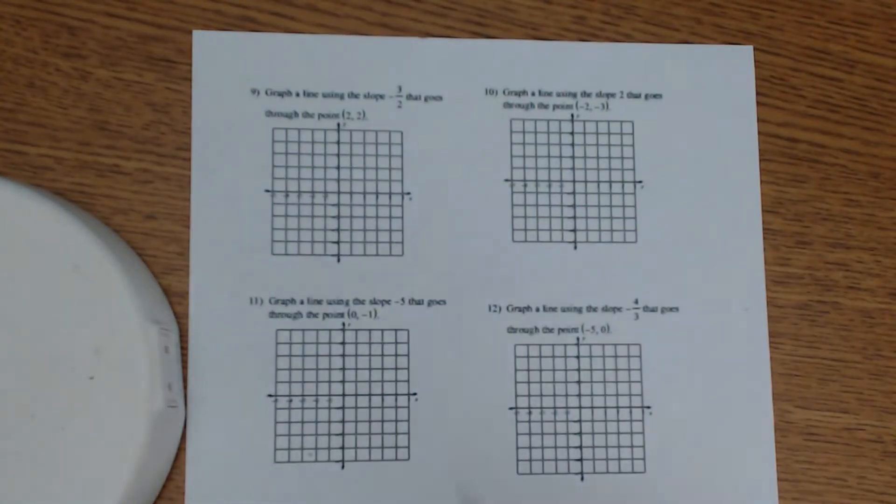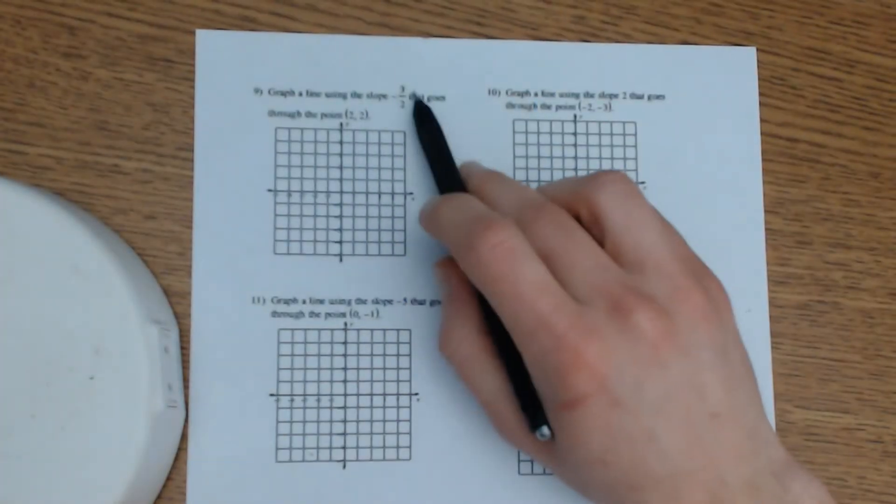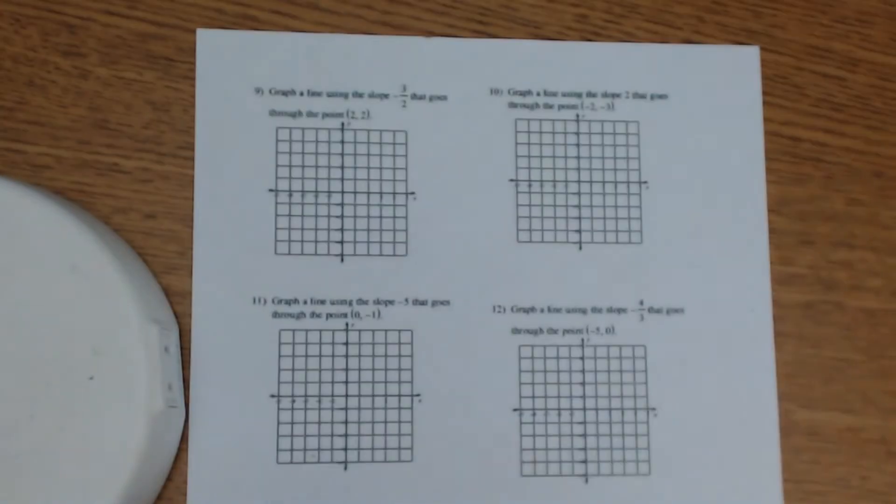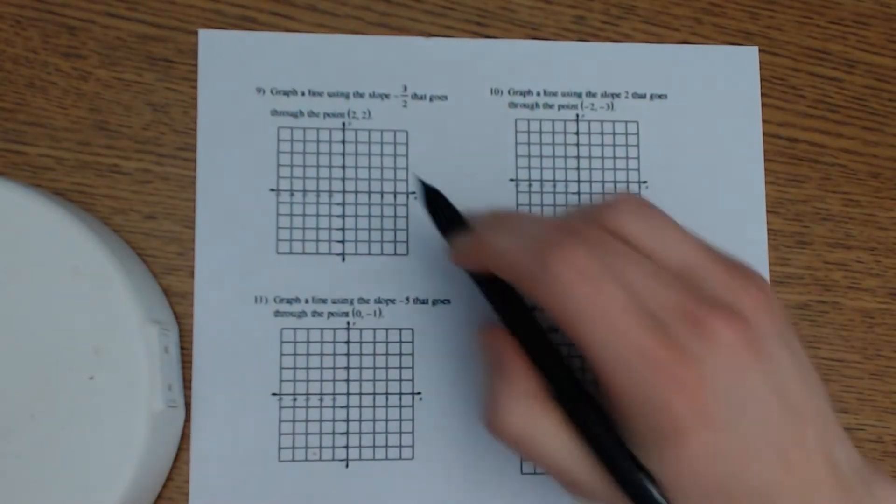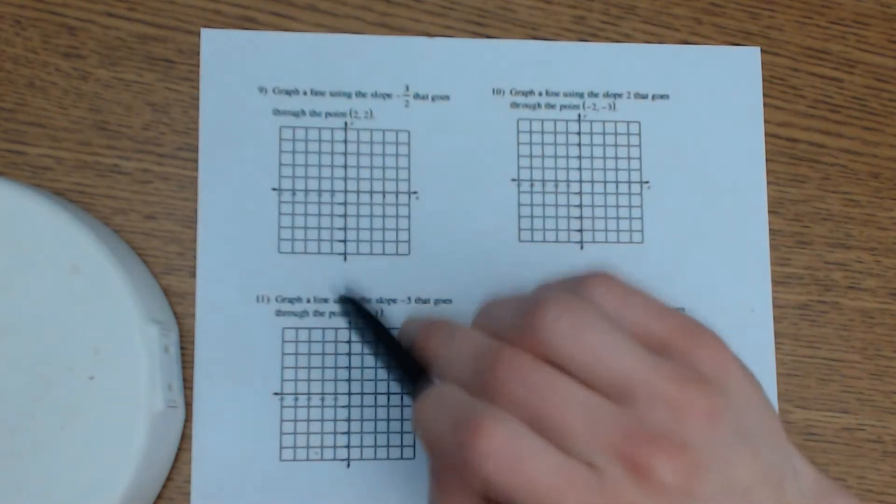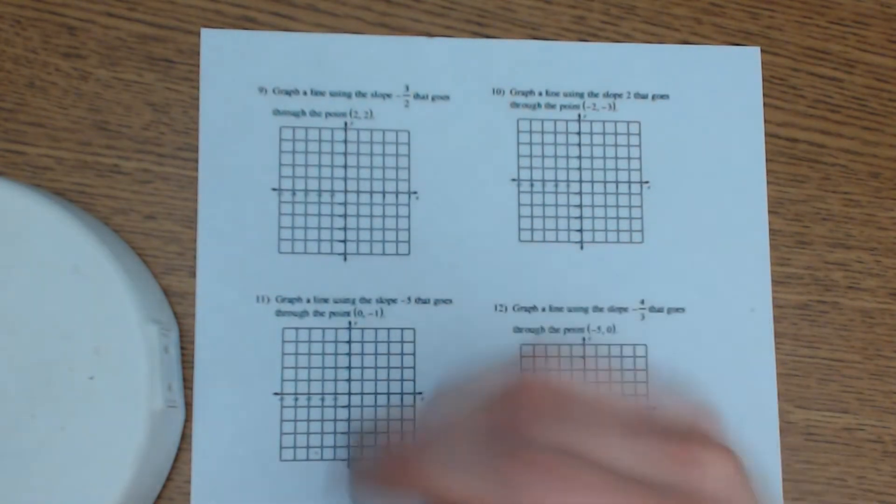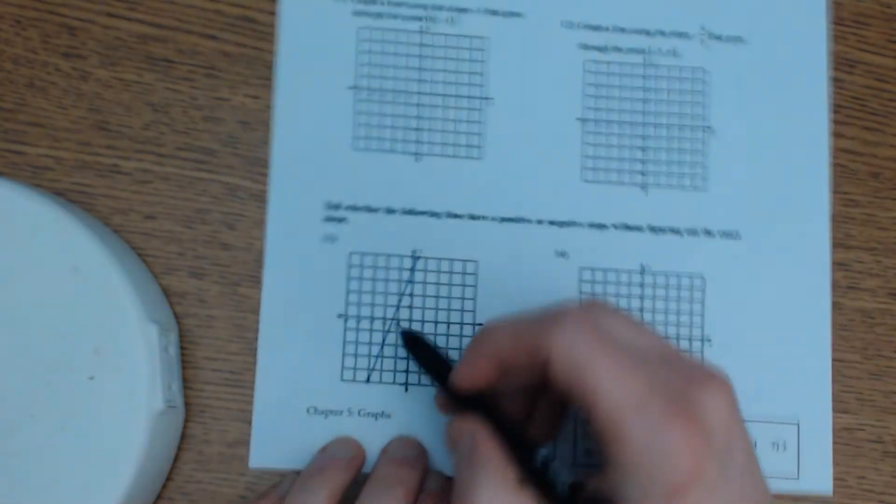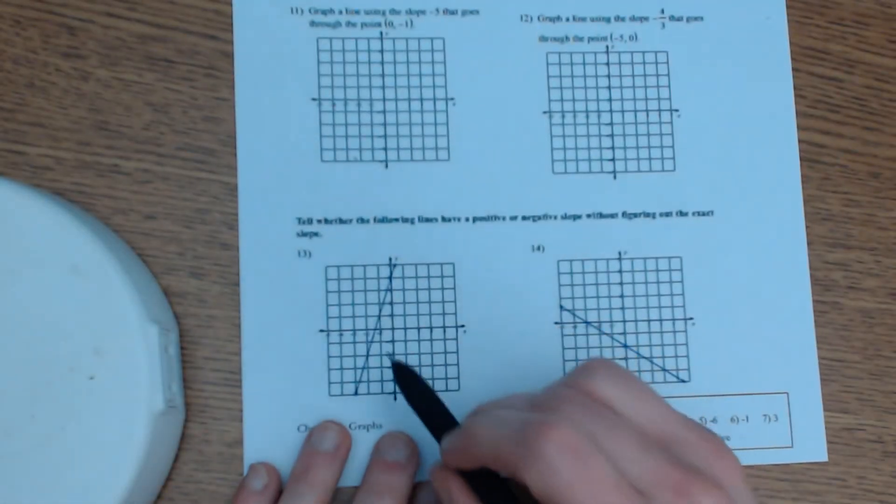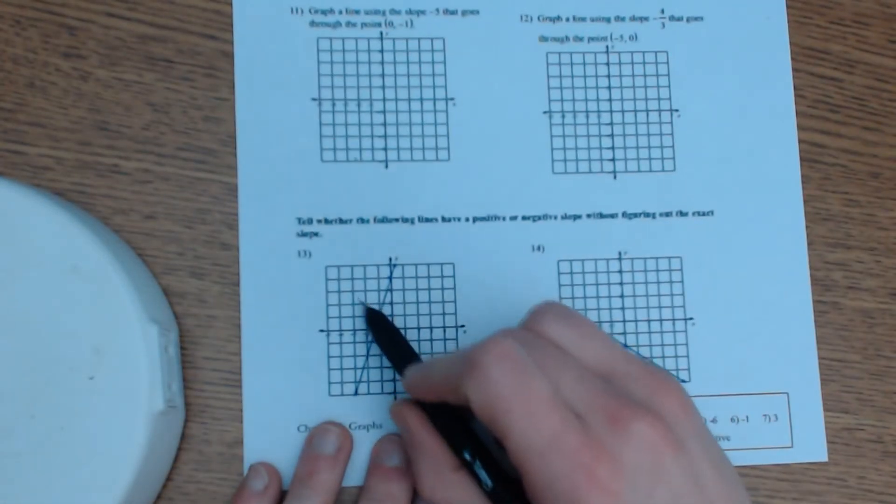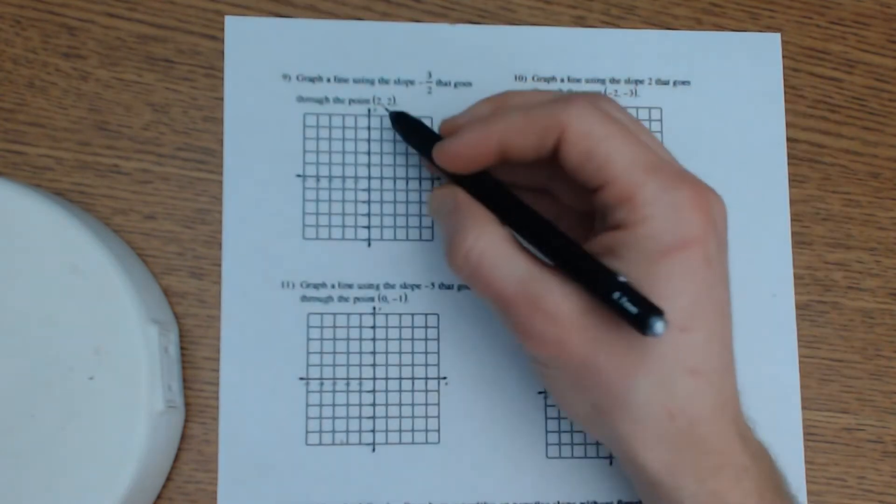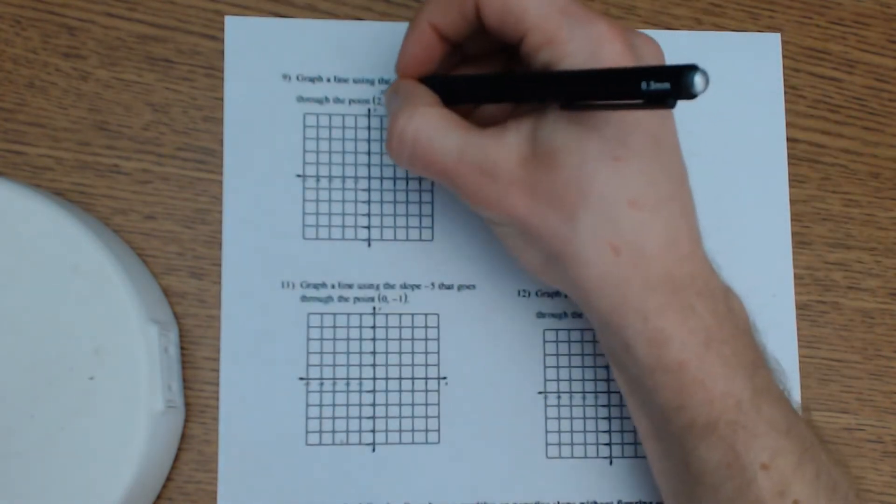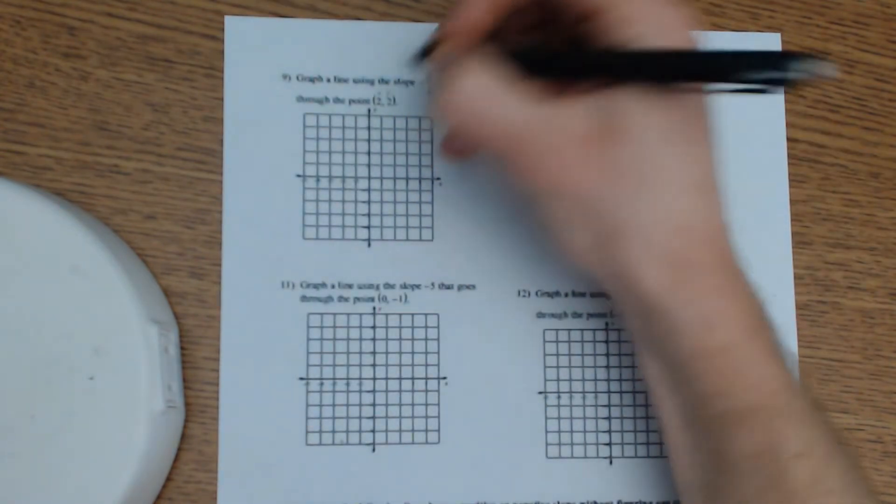When we're doing this, there's two pieces of information given to us. The thing is you have to know which one to start with, whether it's going to be the point or the slope. If you were to start with the slope, we don't really know where to start from. The whole point of slope is it's the rise and run from one point on your line to another point on the line. So you need a first point. That's where this first ordered pair, this point (2,2) comes from. Remember that x is first and then y is second.